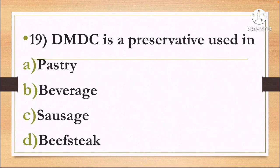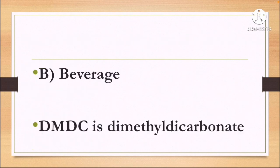Next question: DMDC is a preservative used in — Option A: Pastry, Option B: Beverage, Option C: Sausage, and Option D: Beefsteak. The correct answer is Option B, Beverage. DMDC stands for Dimethyl Dicarbonate and is used as a preservative in beverages.